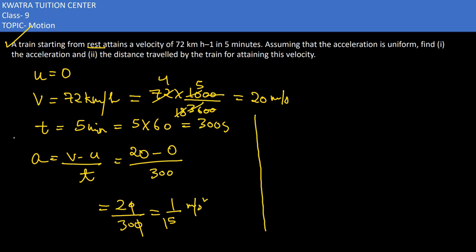Similarly in the second case, we have to find the distance traveled. You can find it with the S formula, which we know is U·t plus half a·t squared. U's value is 0, so 0 times t is 0. Half as it is, a is 1 by 15, t squared is 300 squared.